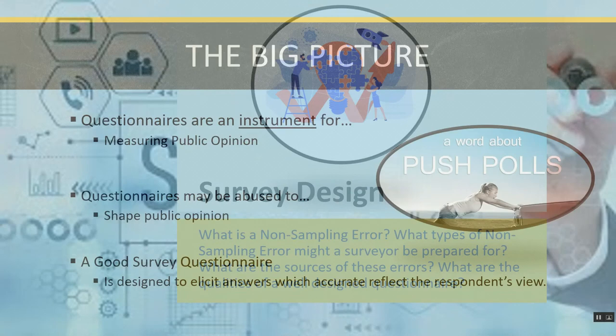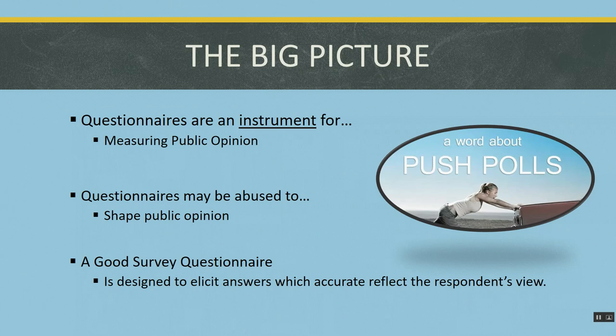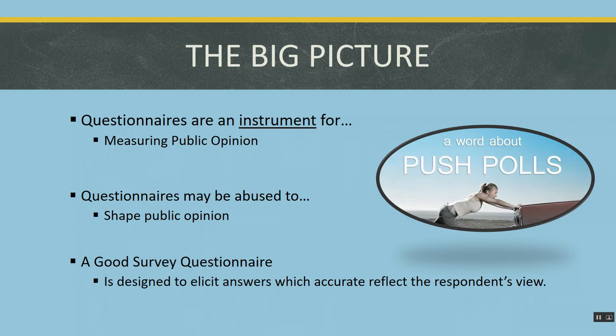Questionnaires or surveys are instruments for measuring public opinion. A scientific public opinion poll has a well-designed questionnaire — one designed to elicit responses which honestly and accurately reflect the opinions, behaviors, attitudes, and beliefs of the respondents, not the interviewer or the person bankrolling the survey. A questionnaire is well-designed when it elicits responses that accurately and honestly reflect the opinions, attitudes, beliefs, and habits of the respondents, not the researchers.